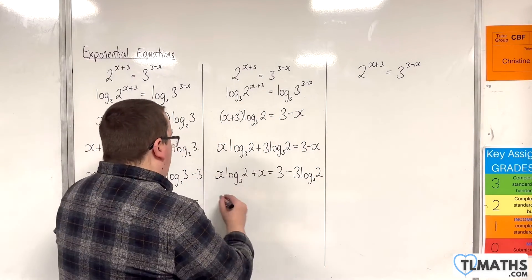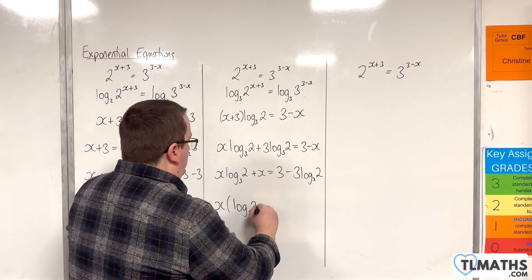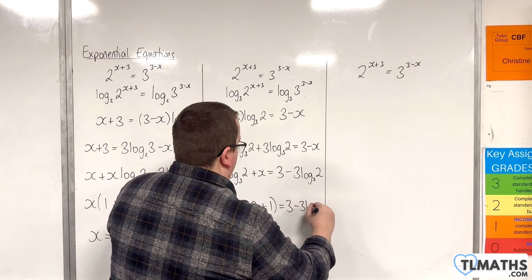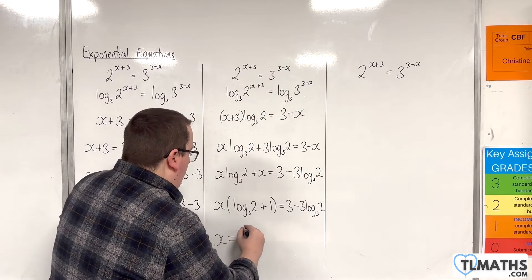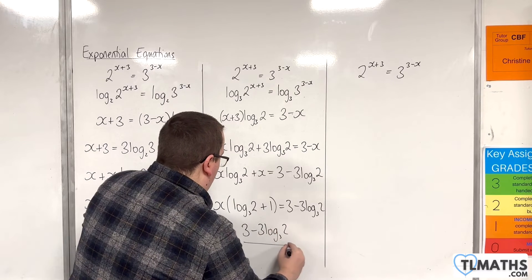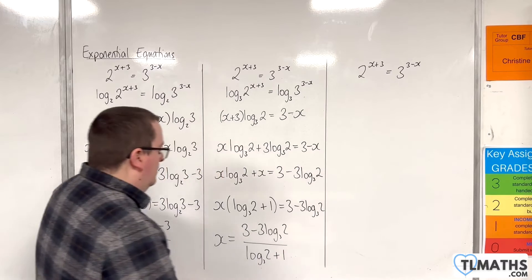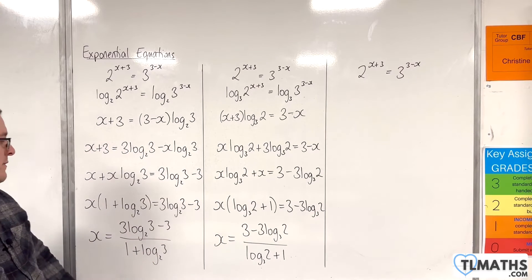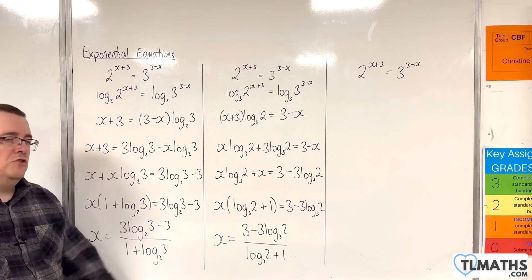Factorise the left hand side, so x lots of log base 3 of 2 plus 1. And now divide through by the bracket, so x is 3 take away 3 log base 3 of 2 over log base 3 of 2 plus 1. You can see they do have similarities, don't they? These two are equivalent.